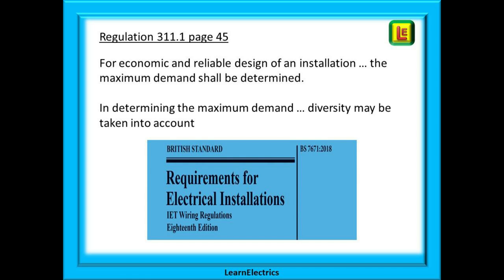The wiring regulations state that for economic and reliable design of an installation, the maximum demand shall be determined. In determining the maximum demand, diversity may be taken into account. Diversity tells us that some circuits will not be fully loaded. If we add up all the circuit breakers in the consumer unit, it will easily come to 150 amps, 180 amps, or even more, all through a main fuse of only 100 amps. This can't be right, but applying diversity we may find that the true load is only 80 or 90 amps.